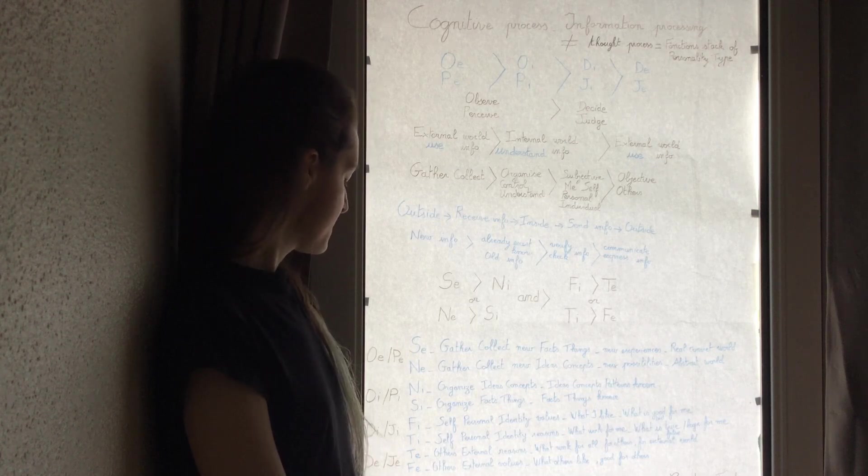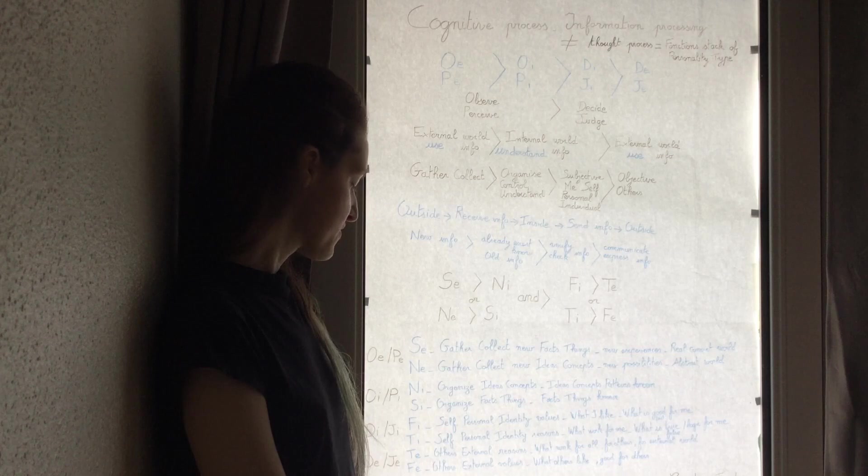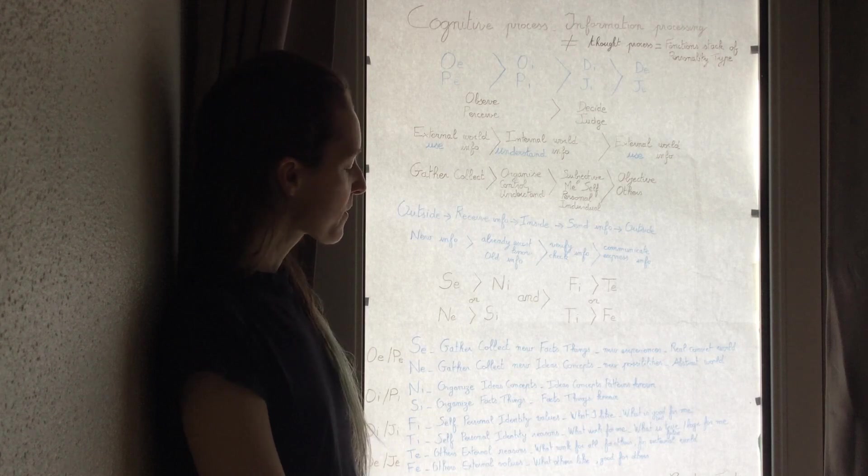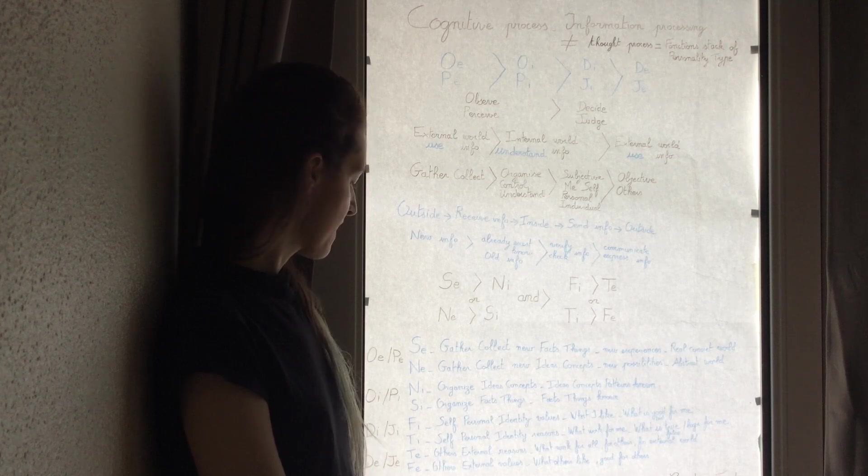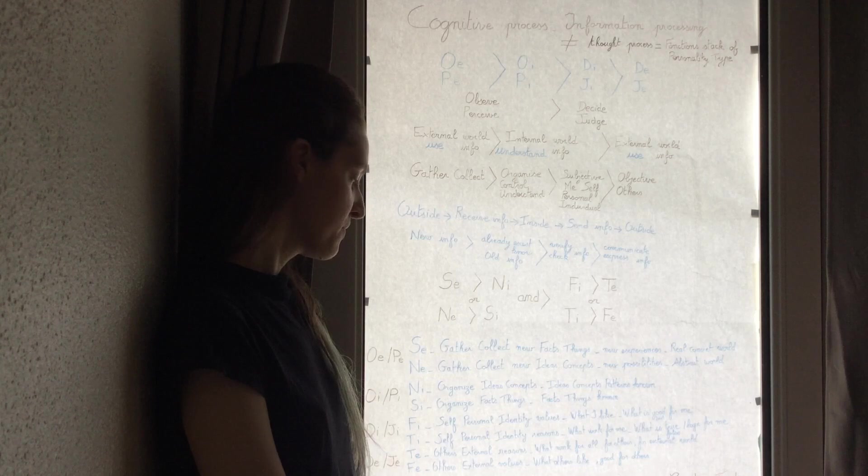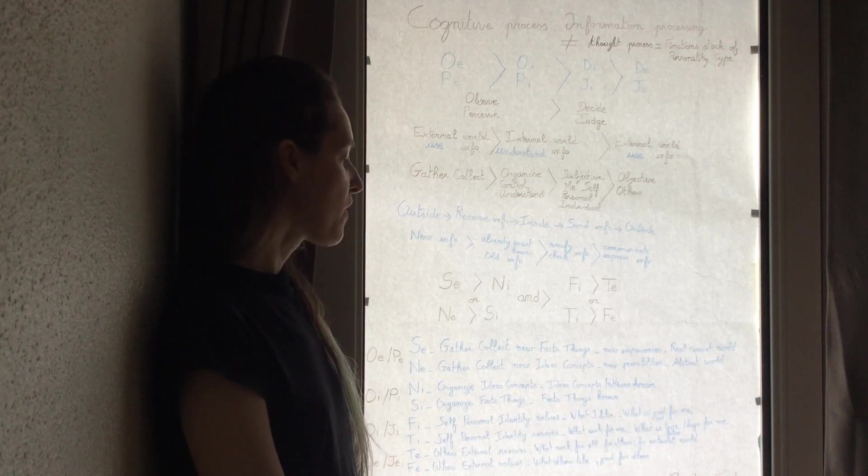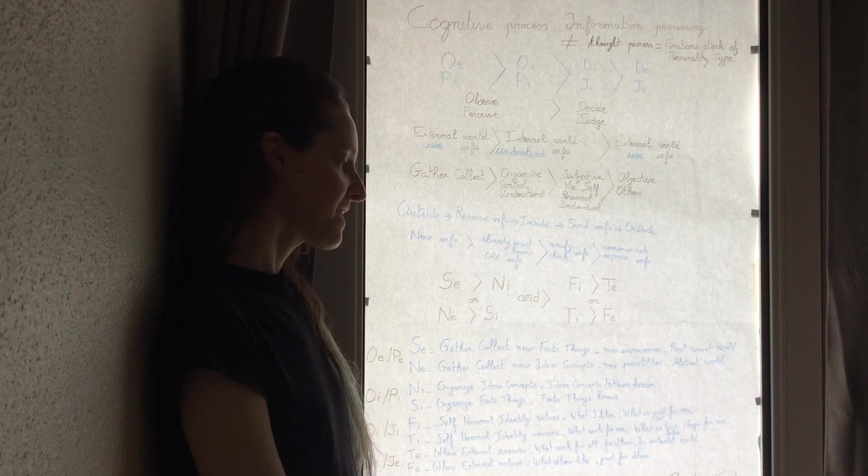And the deciding, judging extroverted function, Te, is other external reason—what works for all, for others, for the external world. Fe is other external values—what others like, what is good for others, for the external world.